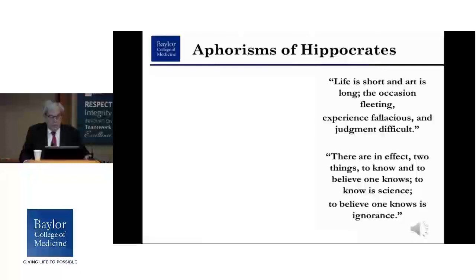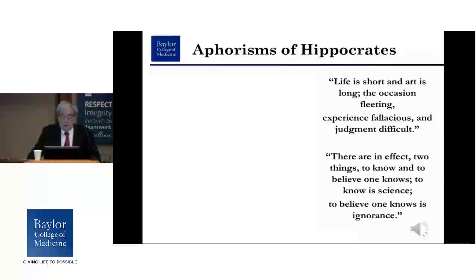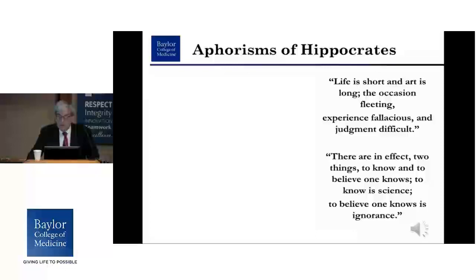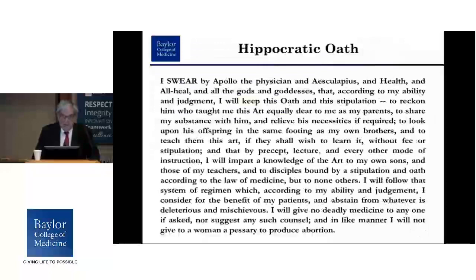Here are some aphorisms of Hippocrates. The picture on the left is the tree on Kos where supposedly he did his training and teaching. 'Life is short and art is long, the occasion fleeting, experience fallacious, and judgment difficult. There are, in effect, two things: to know and to believe one knows. To know is science. To believe one knows is ignorance.'